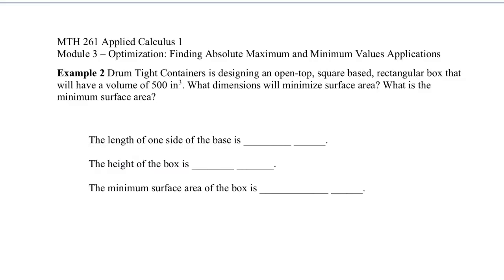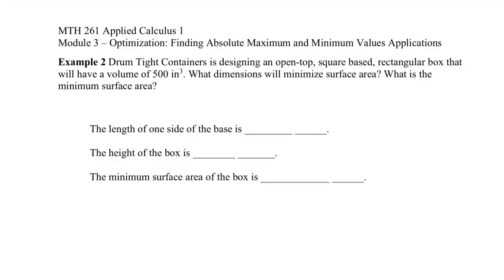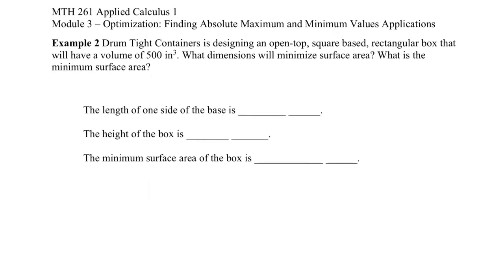Drum Tight Containers is designing an open-top square-based rectangular box that will have a volume of 500 cubic inches. What dimensions will minimize surface area? What is the minimum surface area?